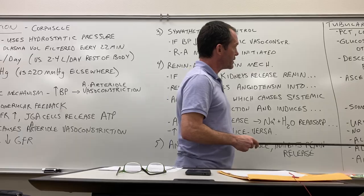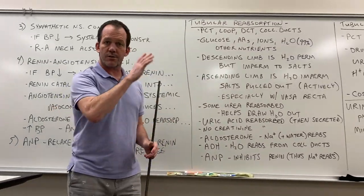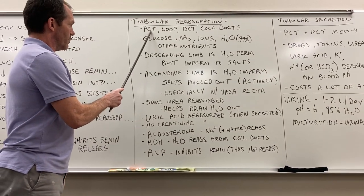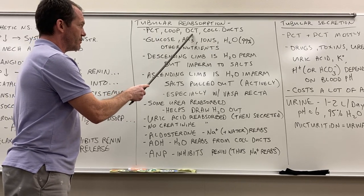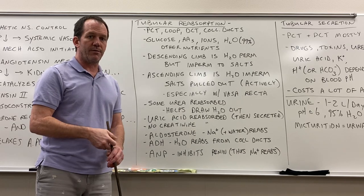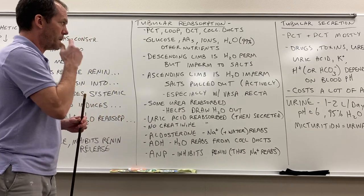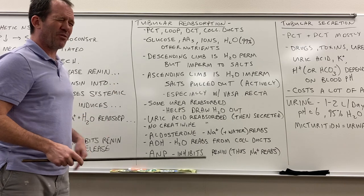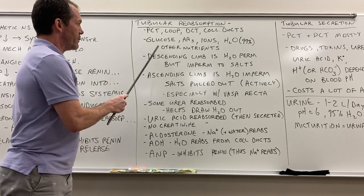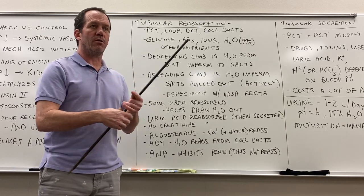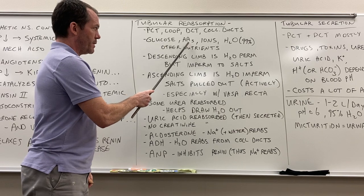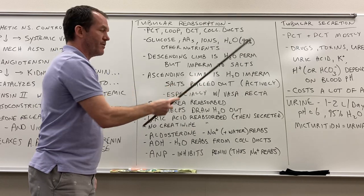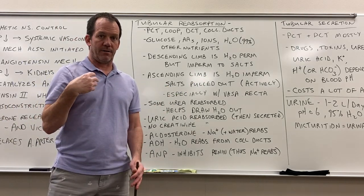Tubular reabsorption occurs in the proximal convoluted tubule, loop of Henle, distal convoluted tubule, and collecting ducts — basically everywhere along the nephron except the corpuscle. What's reabsorbed includes sugar, amino acids, ions, nutrients, water, and salt. About 99% of the filtered water is recovered during tubular reabsorption.